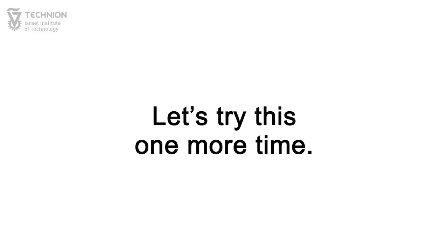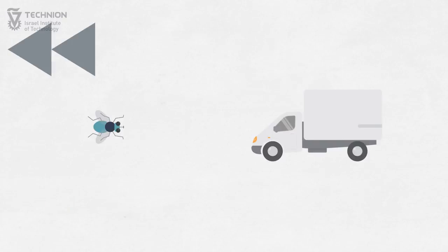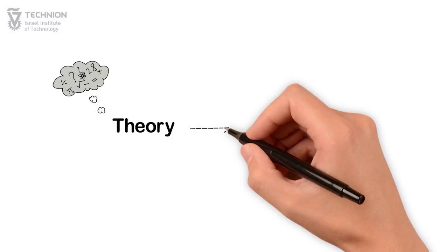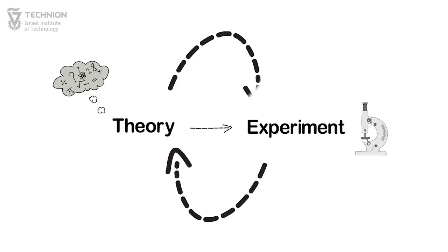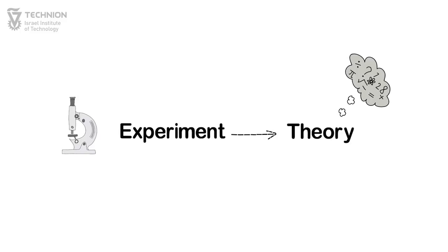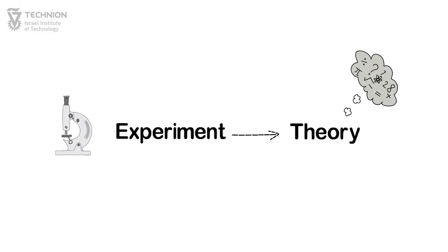Let's try this one more time. What if, instead of teaching theory before the experiment, we reversed the order? That is, start with the experiment and deduct the theory from it, just like true scientists do when they investigate a phenomenon.